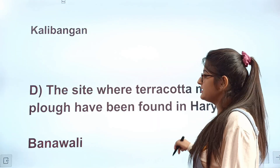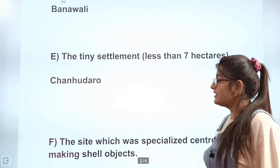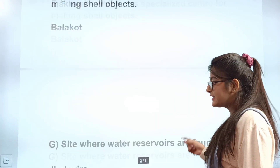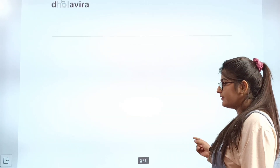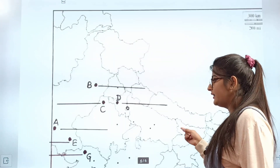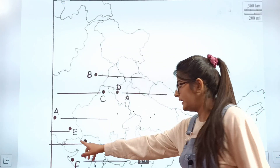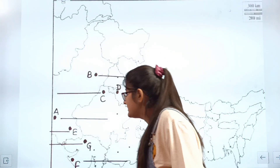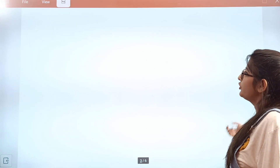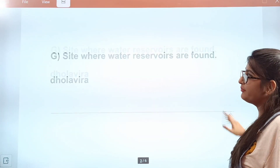Let's see question number E — the site which is less than 7 hectares in area. Once you check this location on the map, you can see where E is marked. Now let's move on to question number F.